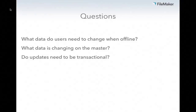The questions to ask yourself are: what data do users need to change when they're offline? If I can keep them from changing data offline, I won't have to deal with any conflicts at all. What data is changing on the master? Is there a possibility of a conflict? And do our updates need to happen transactionally — meaning does it all need to happen, or does none of it need to happen at any given point in time?